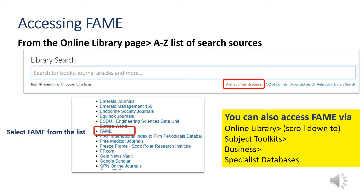To access FAME, go to the online library page in StudyNet, click on the A-Z list of search sources underneath the library search box, and scroll down to FAME. You can also access FAME via the online library page by scrolling down to the subject toolkits, clicking on Business, and opening up the specialist database list.